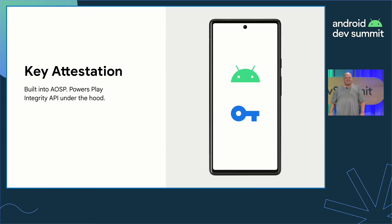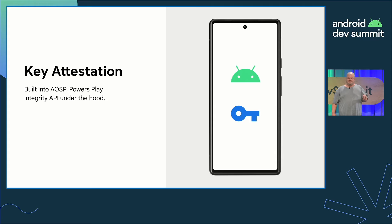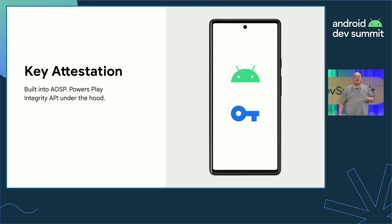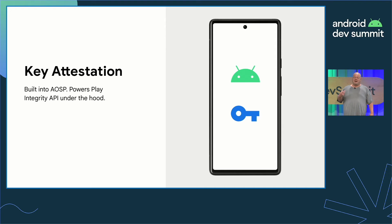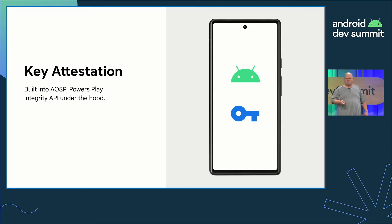Key attestation is a technology built into AOSP that provides a way to strongly determine if an asymmetric key pair is hardware backed. It shows the boot time properties of the device at the time the key was created, the properties of the key, and what constraints are applied to its usage. While it was built for the general case of binding attestation to hardware and firmware signals, its use case as an integrity monitor makes it a great foundation for the Play Integrity API to build on top of.